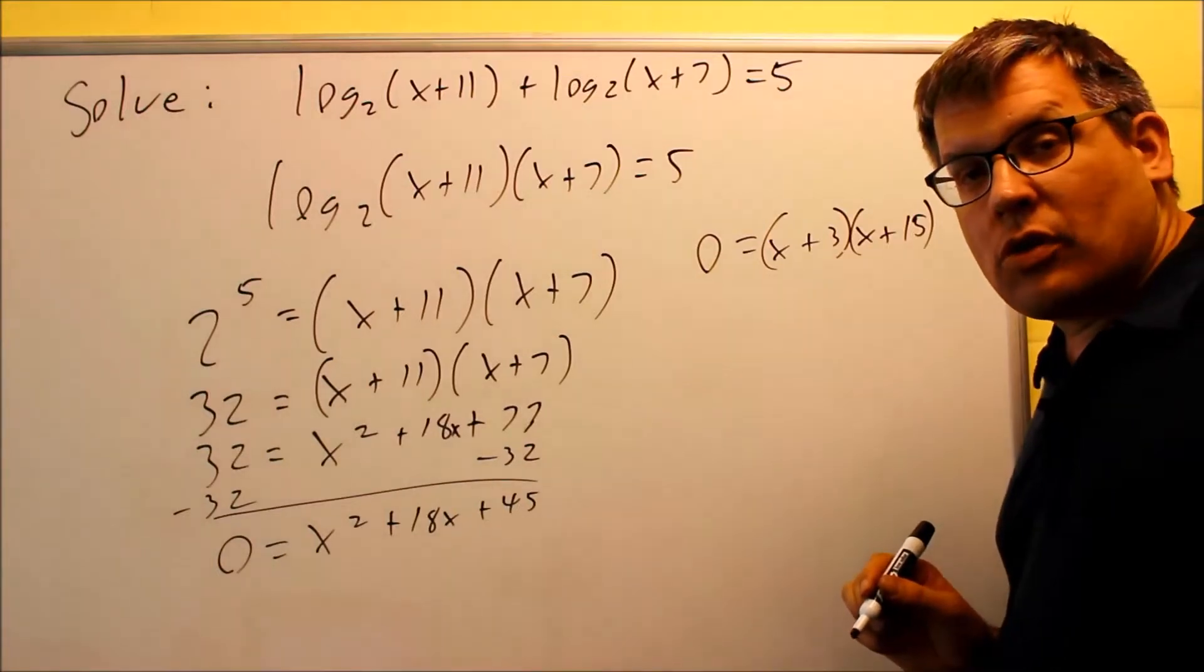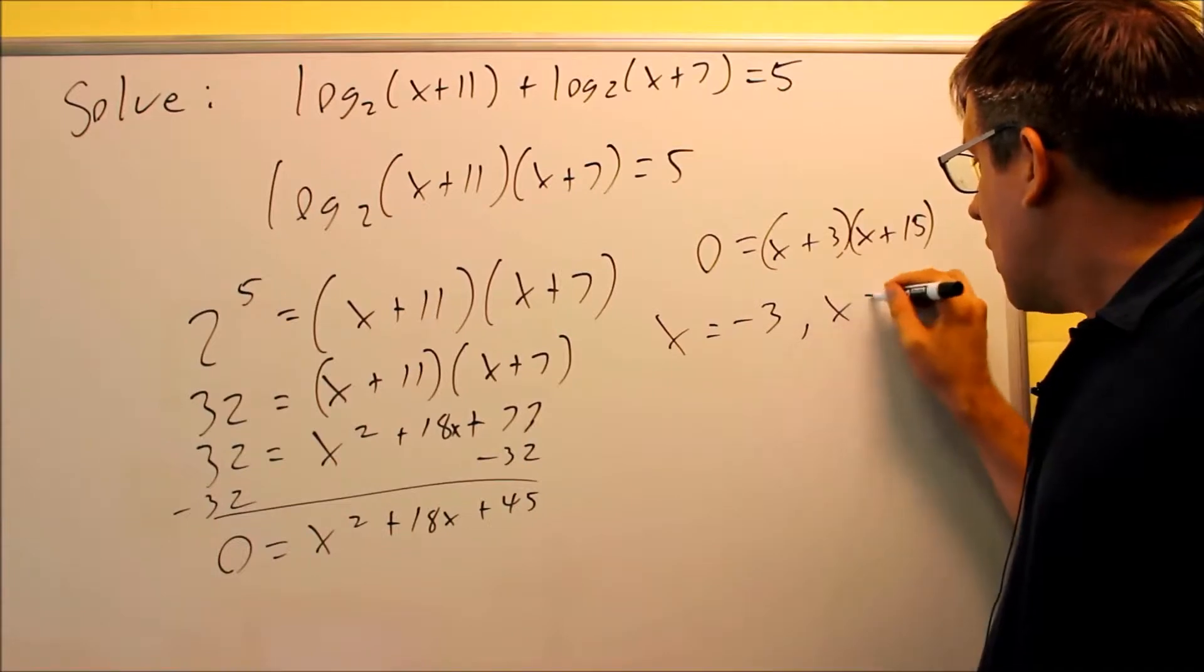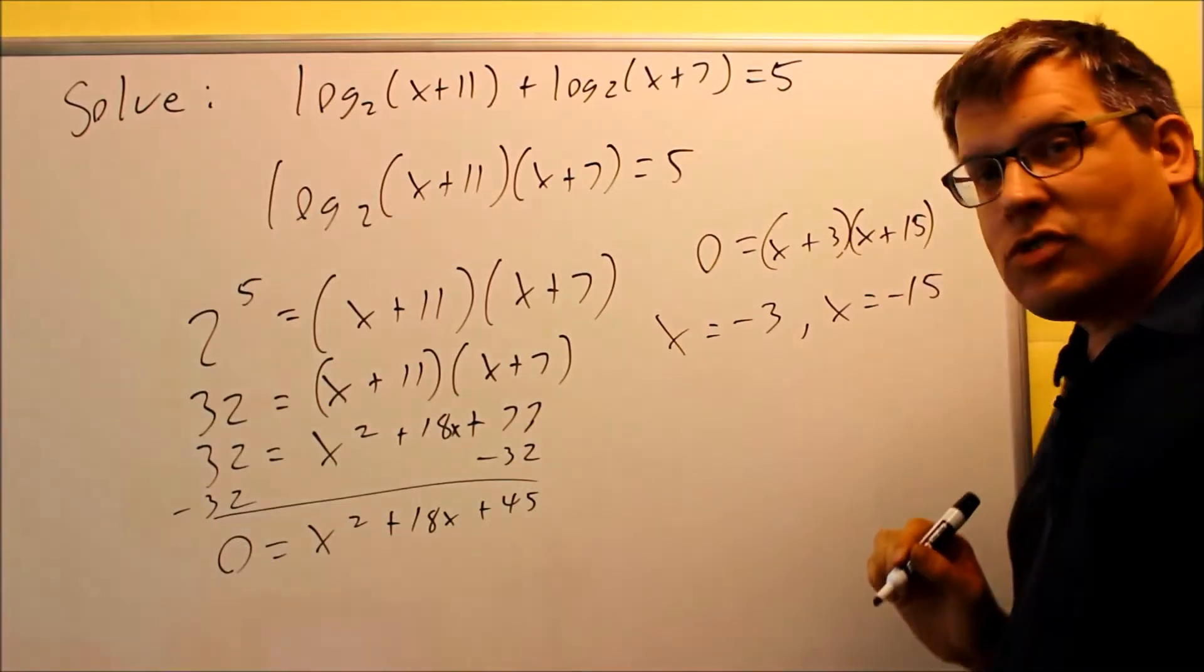You're going to set both of them equal to zero. So if you do that, you get x is equal to negative three, and you're also going to get x is equal to negative fifteen.